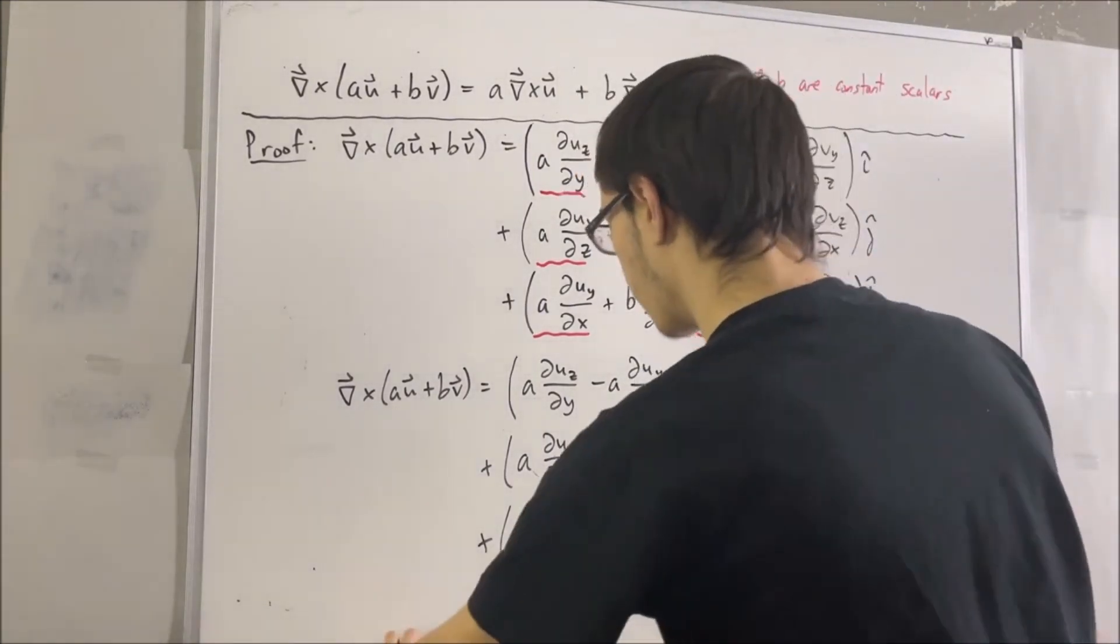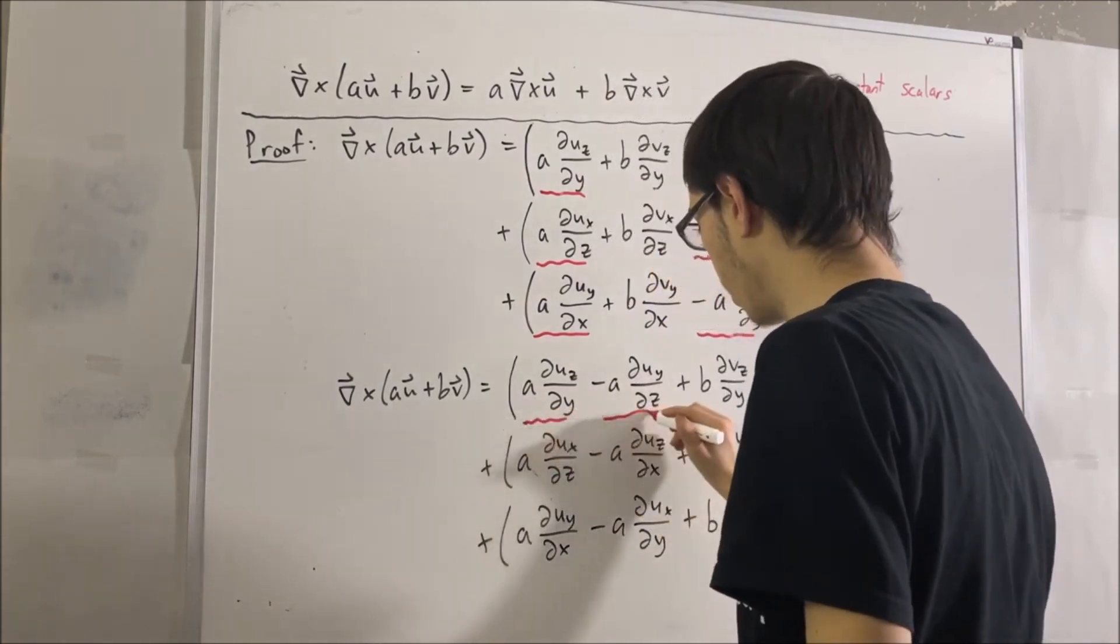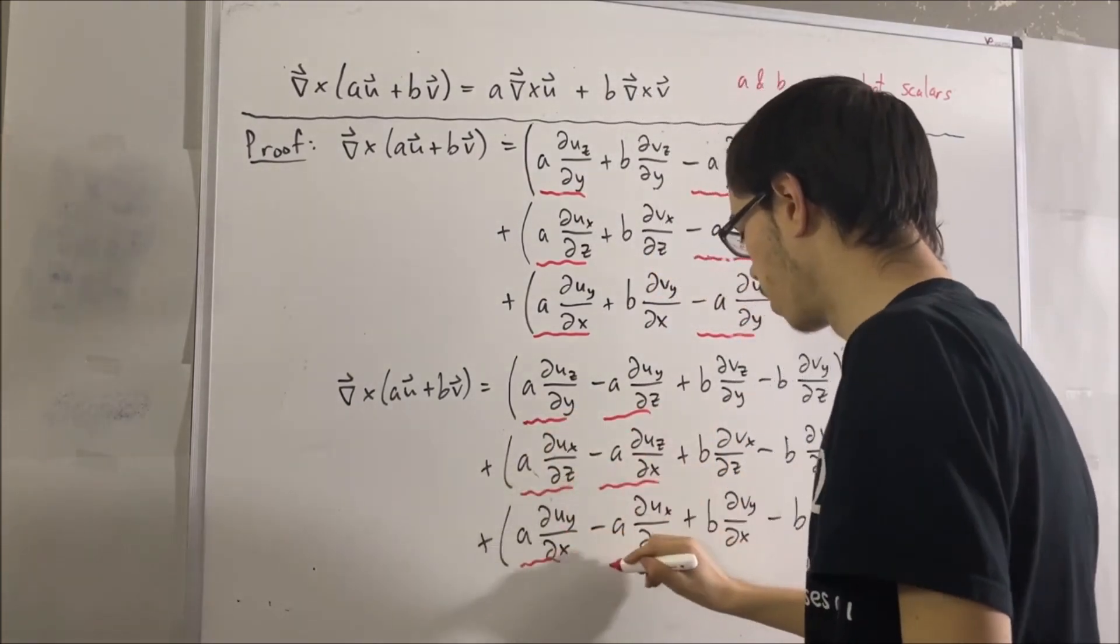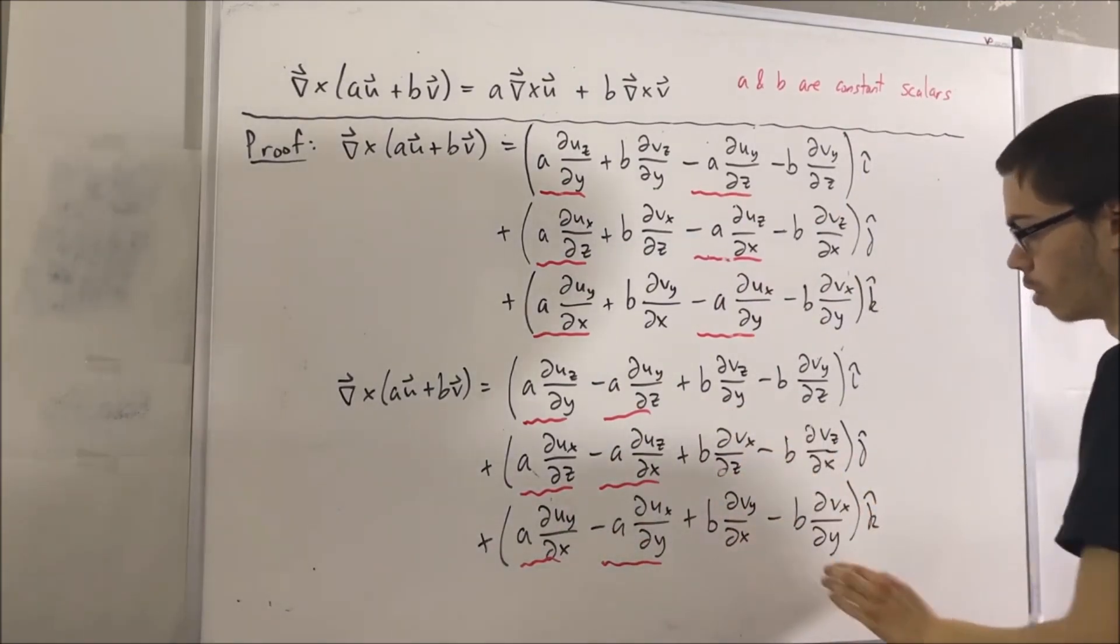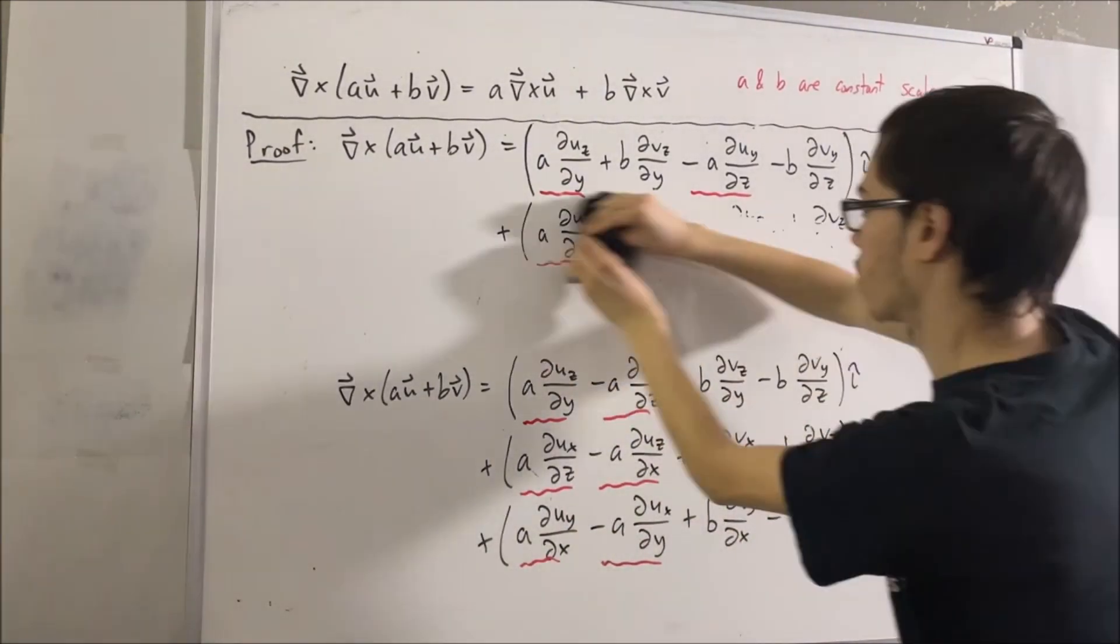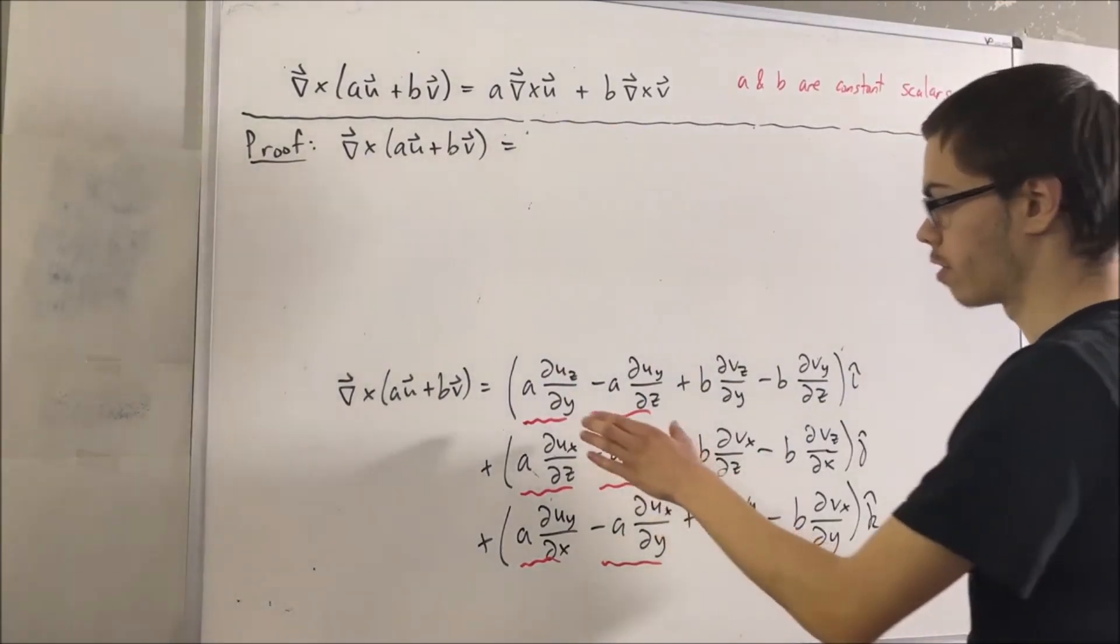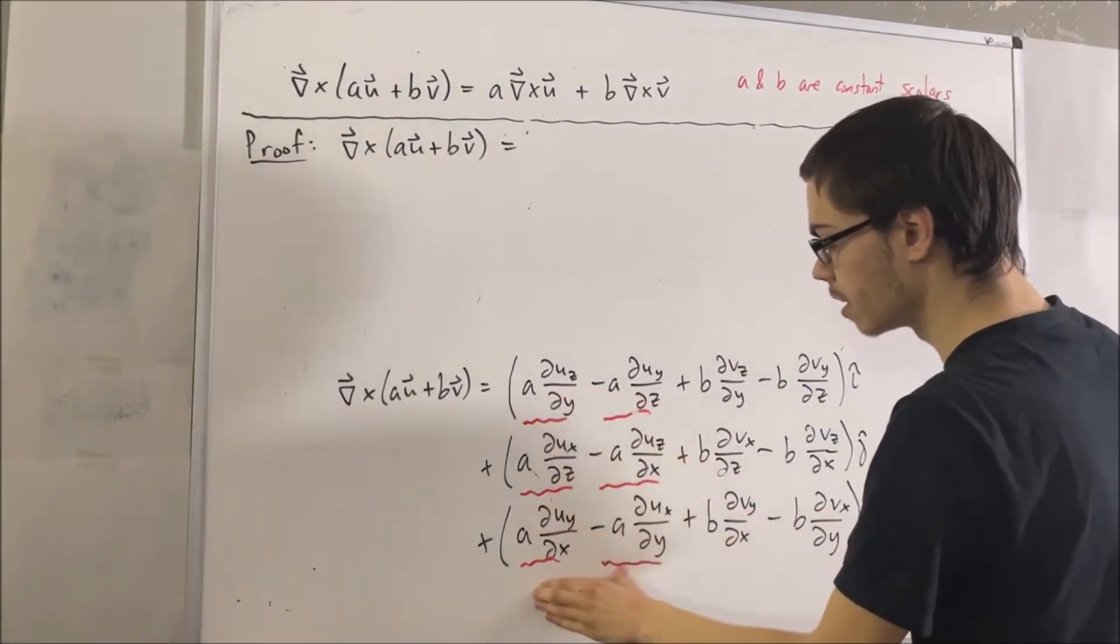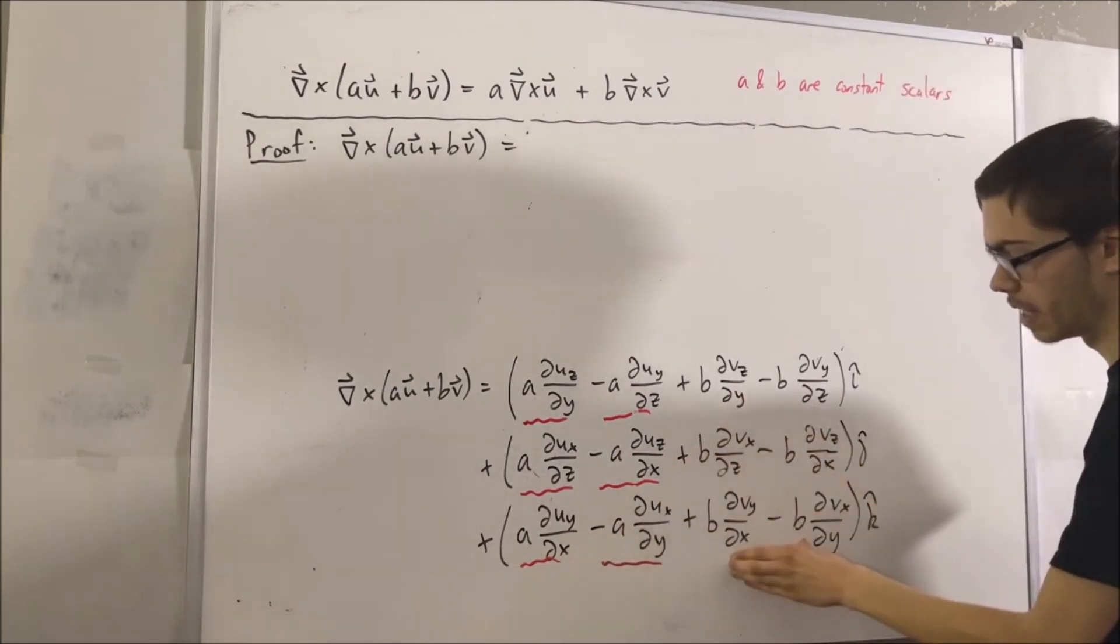And so, now that we have that, notice that our terms with a in it are now grouped together, and our non-underlined terms, which are the ones that contain b, are also grouped together. Next, what I'm going to do is I'm going to factor out a from these terms, and I'm going to factor out b from these terms.